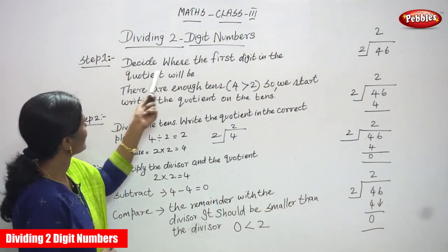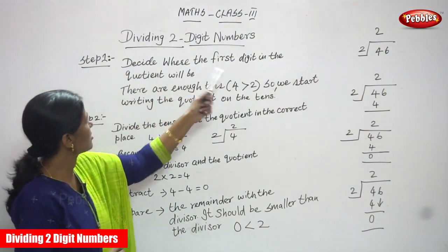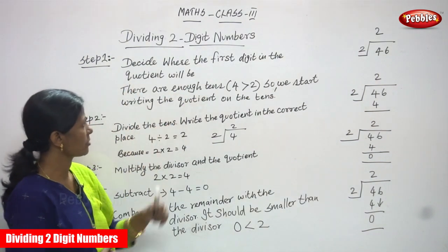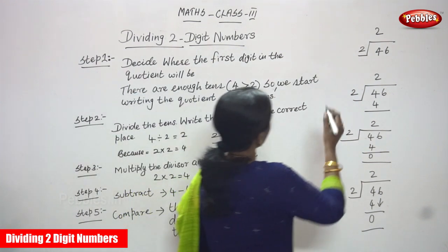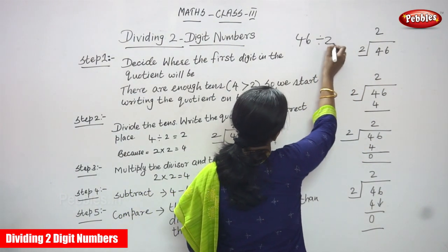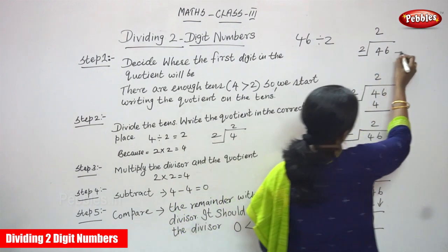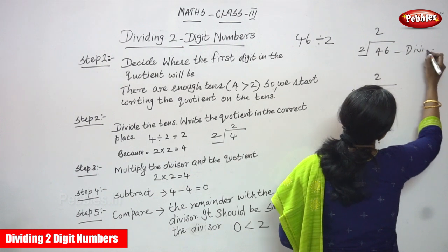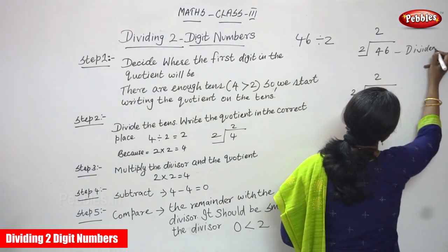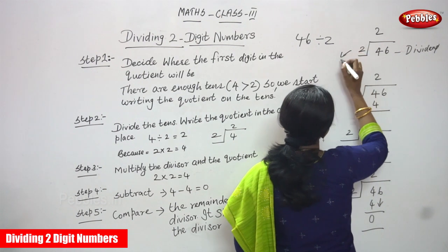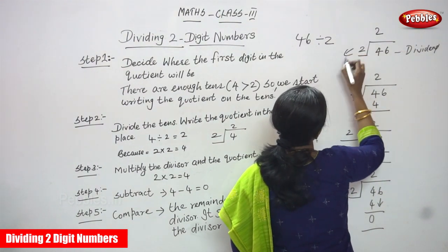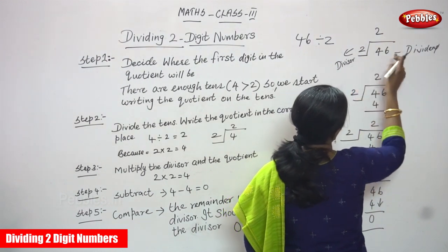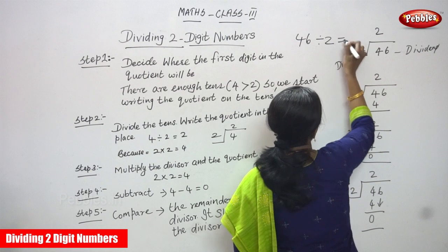Dividing two-digit number, Step 1. Decide where the first digit in the quotient will be. The number 46 is going to be divided by 2. So 46 is the dividend and 2 is the divisor. We are going to find the quotient.